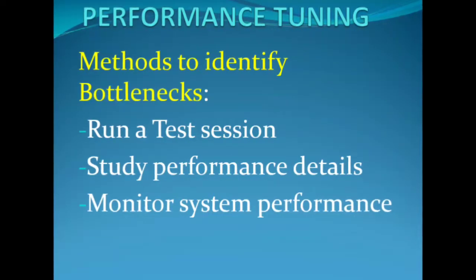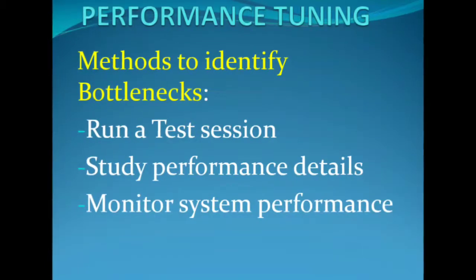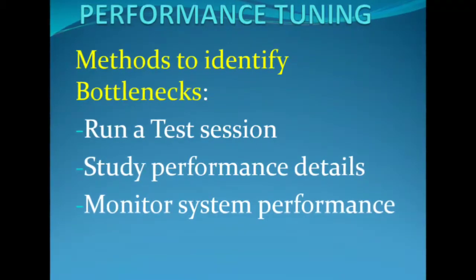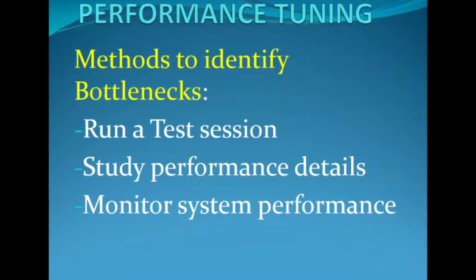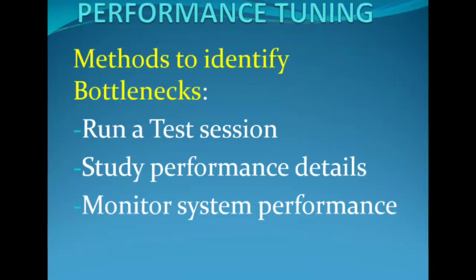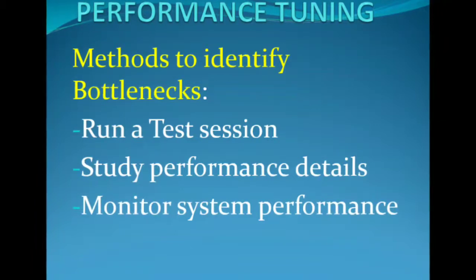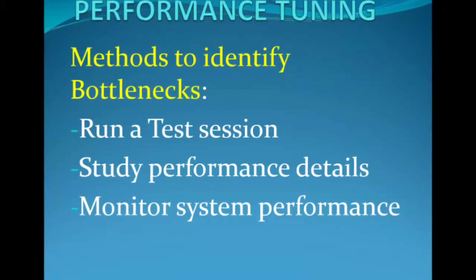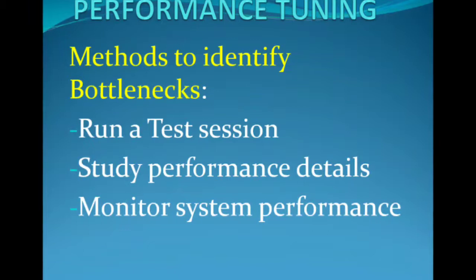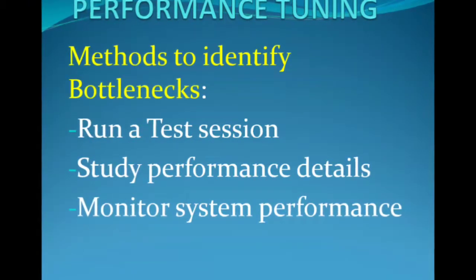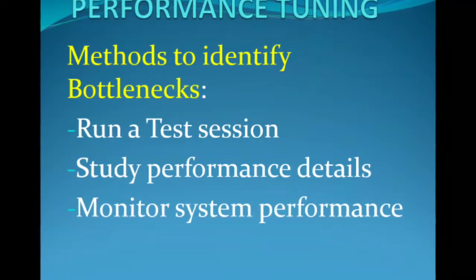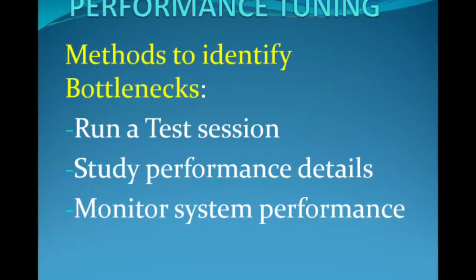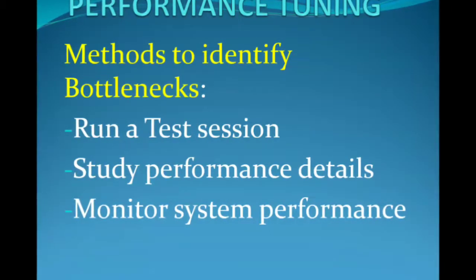Second, study performance details and thread statistics, which help you understand source input rows, target output rows, error counters, and issues with input and output rows. You can easily identify these with performance details, and you can see all the steps that the Data Transformation Manager and Integration Service have been doing — counters like read from disk and write to disk help identify session bottlenecks. Third, monitor system performance using system monitoring tools to view CPU usage, I/O waits, and paging to identify system bottlenecks.